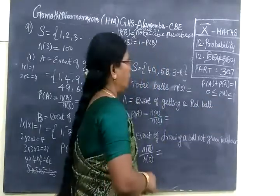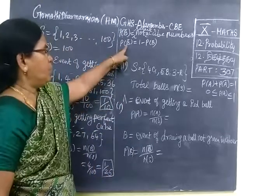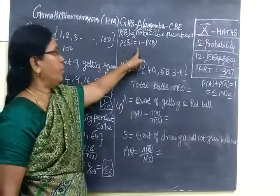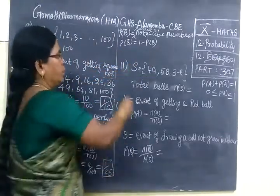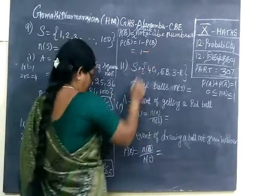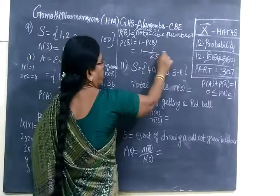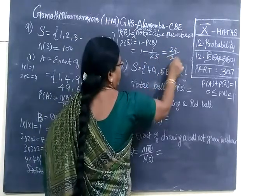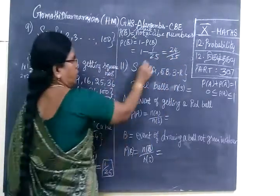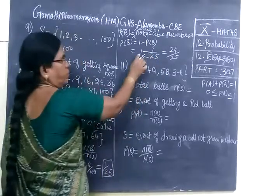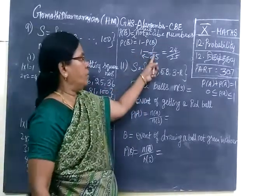Probability should be maximum value 1, minimum value 0, no negative value. So P(B̄) means 1 minus P(B) equal to 1 minus 1 by 25. If we separate we get 24 by 25. We just cross multiply: 1 into 25 equals 25 minus 1 equals 24 by 25.